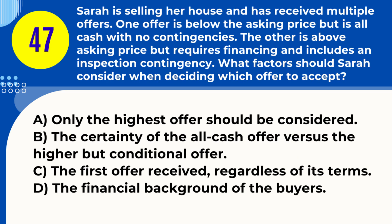Question 47. Sarah is selling her house and has received multiple offers. One offer is below the asking price but is all cash with no contingencies. The other is above asking price but requires financing and includes an inspection contingency. What factors should Sarah consider when deciding which offer to accept? A. Only the highest offer should be considered. B. The certainty of the all-cash offer versus the higher but conditional offer. C. The first offer received, regardless of its terms. D. The financial background of the buyers. Answer: B. The certainty of the all-cash offer versus the higher but conditional offer. Explanation: Sellers like Sarah should consider the certainty and simplicity of an all-cash offer against a potentially higher but conditional financed offer.